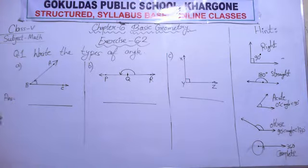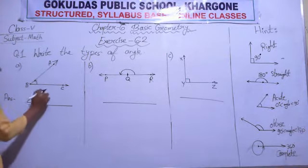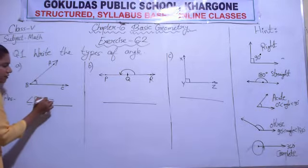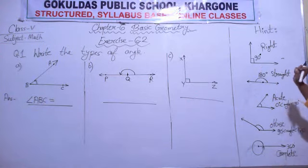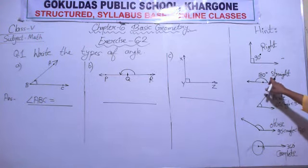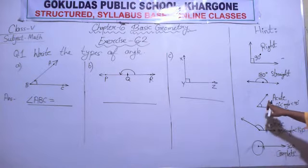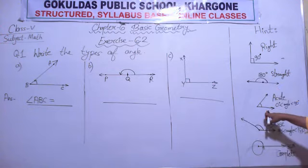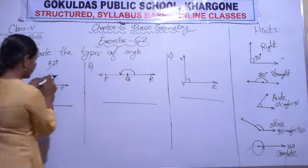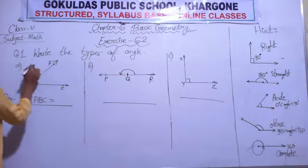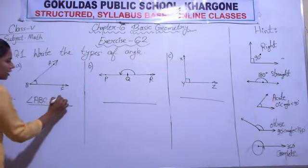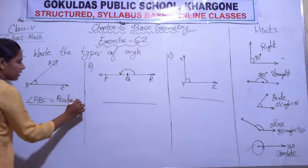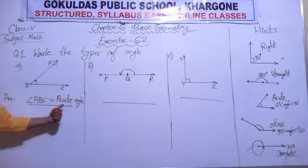For question A, angle A-B-C: is it a right angle? No — right angle is 90 degrees. Is it a straight angle? No. Is it an acute angle? Observe the figure — yes, it is an acute angle because it is greater than 0 degrees but less than 90 degrees. So angle A-B-C is an acute angle. Remember, B is written in the center because the angle is formed at vertex B.